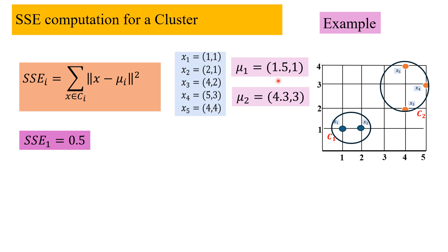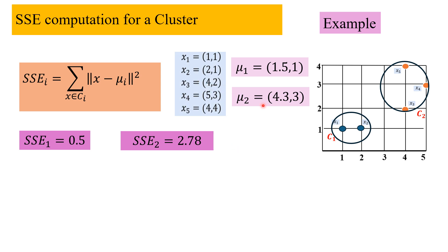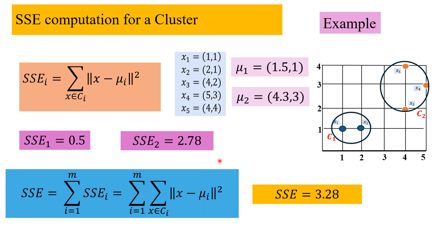The difference between 1 and 1.5 is 0.5, and the square of 0.5 is 0.25. Similarly, the other component also gives 0.25, so we get a sum of 0.5 since the y-component doesn't have any distance. Similarly, for the second cluster, we find the distances of x3, x4, and x5 with mu2. It is a very simple computation and we get the SSE value of 2.78.